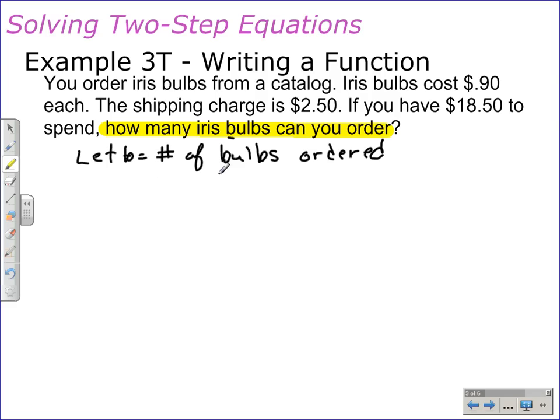Now that I have my variable defined, we can talk about the kind of problem this is. This is a part-whole relationship. The whole being the amount of money that you have to spend, the $18.50. That's how much money you have to spend. The two parts of this problem is the shipping charge of $2.50 and the cost of the irises. The cost of the irises at $0.90 apiece. So, we'll start writing this equation with the whole, or how much money I have to spend. I have $18.50 to spend.